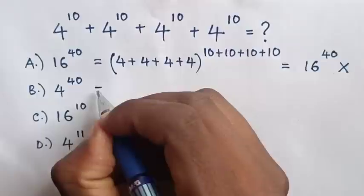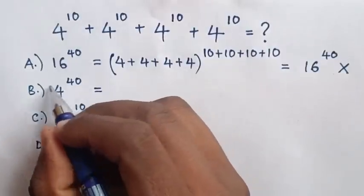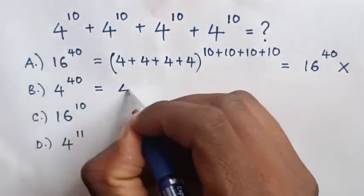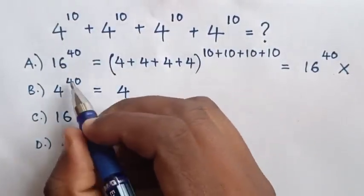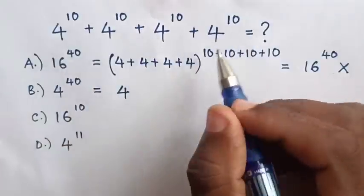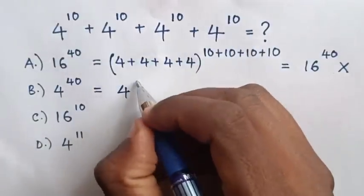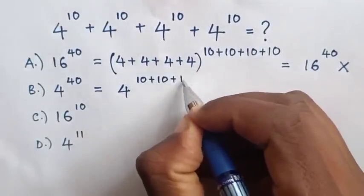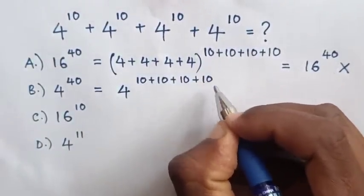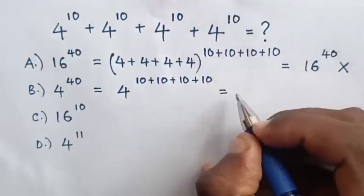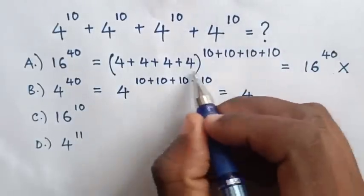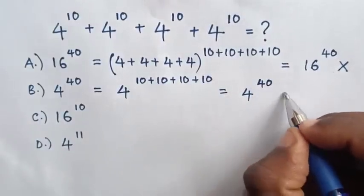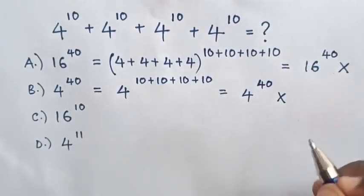For answer B, the base stays as 4, raised to the power of 40, which is the sum of these powers: 10 plus 10 plus 10 plus 10. So this equals 4 to the power of 40. This is also the wrong solution.